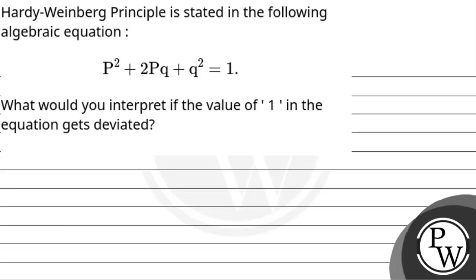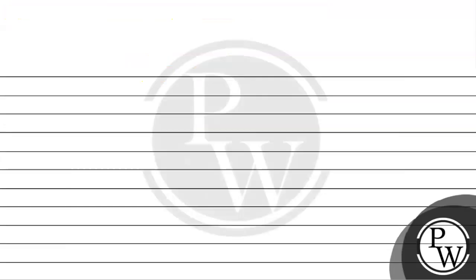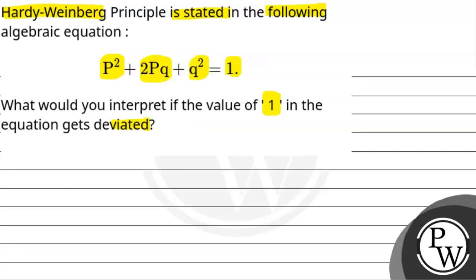Hello, let's read the question. The Hardy-Weinberg principle is stated in the following algebraic equation: P² + 2Pq + q² = 1. What would you interpret if the value of 1 in the equation gets deviated? If the value of 1 deviates, then we will interpret it. First, let's discuss the key concept.